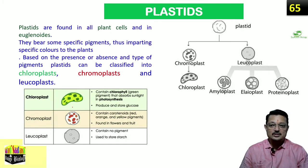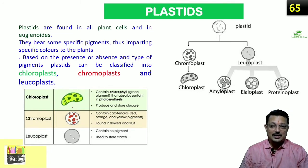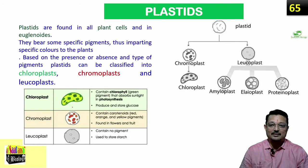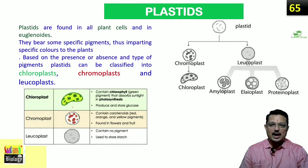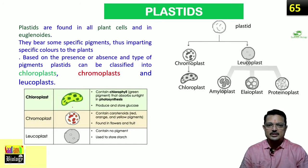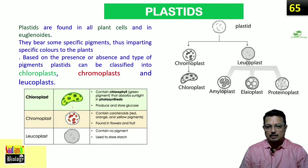Plastids can be classified depending on the type of pigment they contain — the color and pigment. We classify them into chromoplast, chloroplast, and leucoplast. Proplastids differentiate into these three types: chromoplast, chloroplast, and leucoplast.